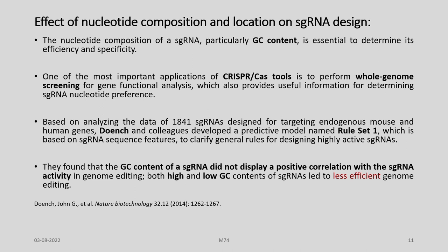Regarding the effect of nucleotide composition and location on sgRNA design: the nucleotide composition of sgRNA, particularly GC content, is essential to determine its efficiency and specificity. One of the most important applications of CRISPR-Cas tools is whole genome screening of gene function analysis. Based on analyzing data of around 1,900 sgRNAs designed for targeting endogenous mouse and human genes, Doench and colleagues developed a predictive model named Rule Set 1, based on sgRNA sequence features to clarify general rules for designing highly active sgRNAs.